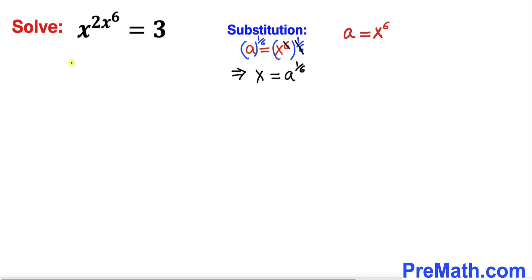So therefore this equation is going to become a power 1 over 6 whole power 2 times a equals to 3.